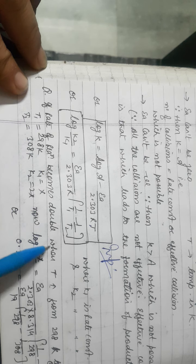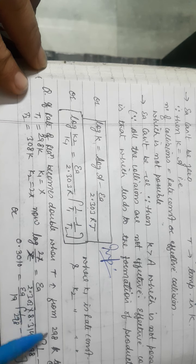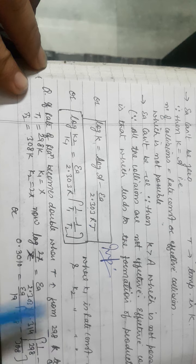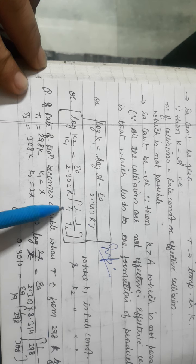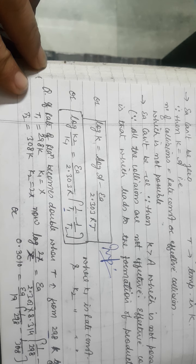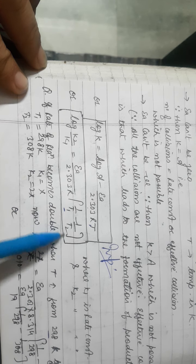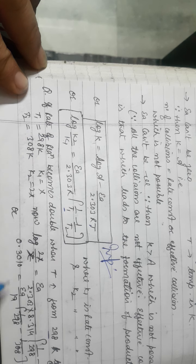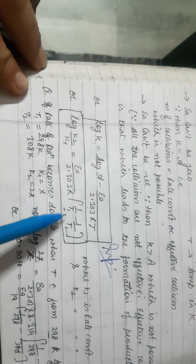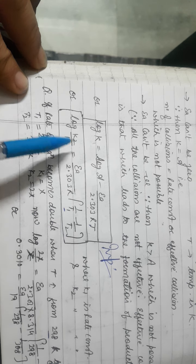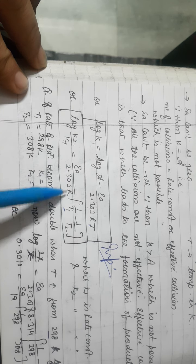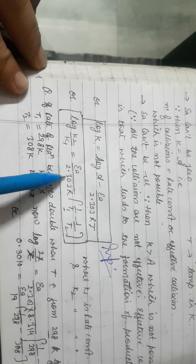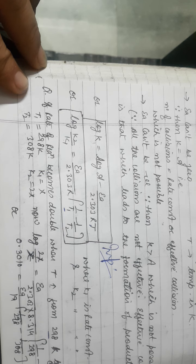NCERT question: If the rate of reaction doubles when temperature is increased from 298 K to 308 K, find Eₐ. Here T₁ = 298 K, T₂ = 308 K, K₂/K₁ = 2 so log(K₂/K₁) = log 2. Using the formula log(K₂/K₁) = (Eₐ/2.303R)(1/T₁ − 1/T₂) — all other values are given or known — you can calculate Eₐ.